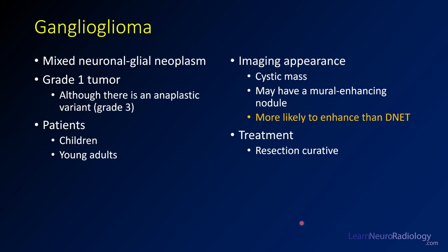This is a case of a ganglioglioma. These are mixed neuronal and glial neoplasms that tend to be WHO grade one tumors, although there is an aggressive variant that can be WHO grade three. They tend to occur in children and young adults. You should think about ganglioglioma anytime you have a temporal lobe mass that's cystic and has a mural enhancing nodule — a cyst with a nodule, a small well-defined mass.